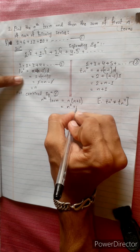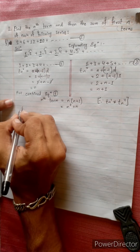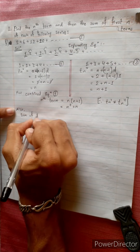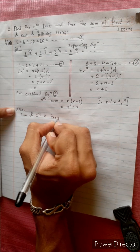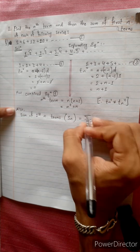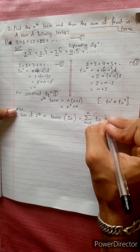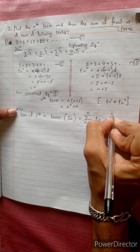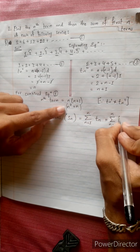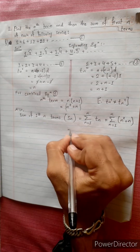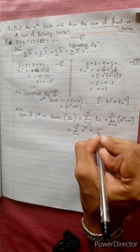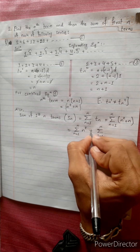This gives us n squared plus n. Also, the sum of first n terms — if n is equal to 1, then sum equals t1, which is equal to t1. So n squared plus n.